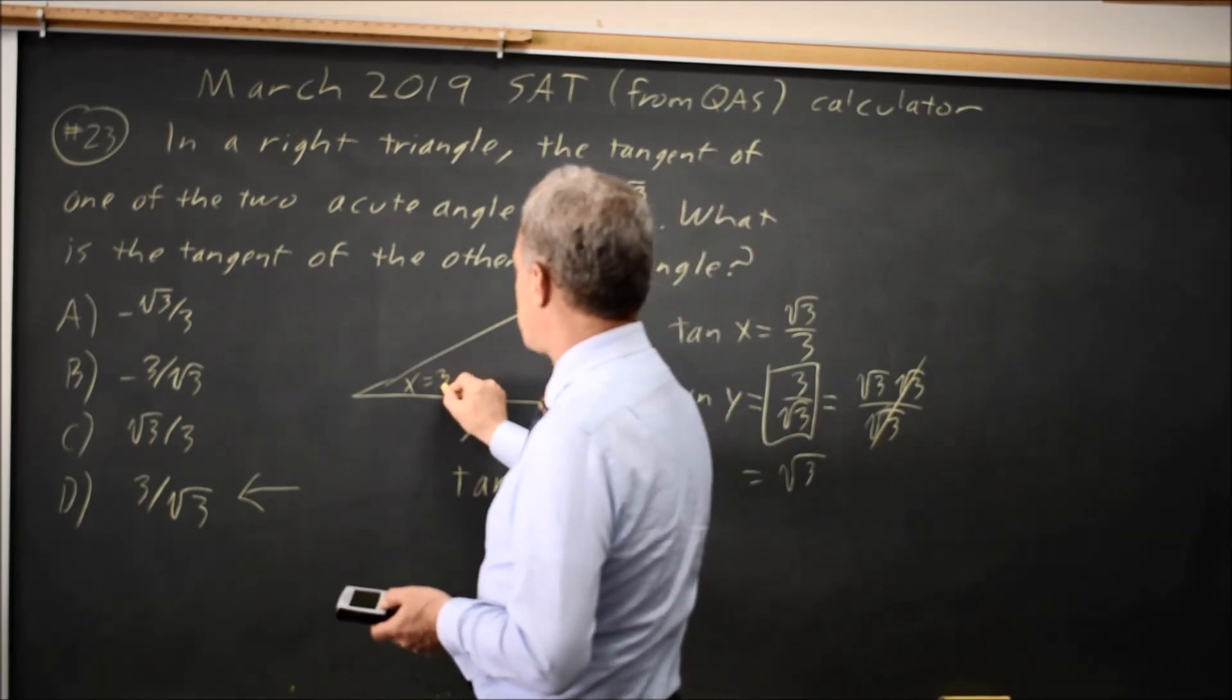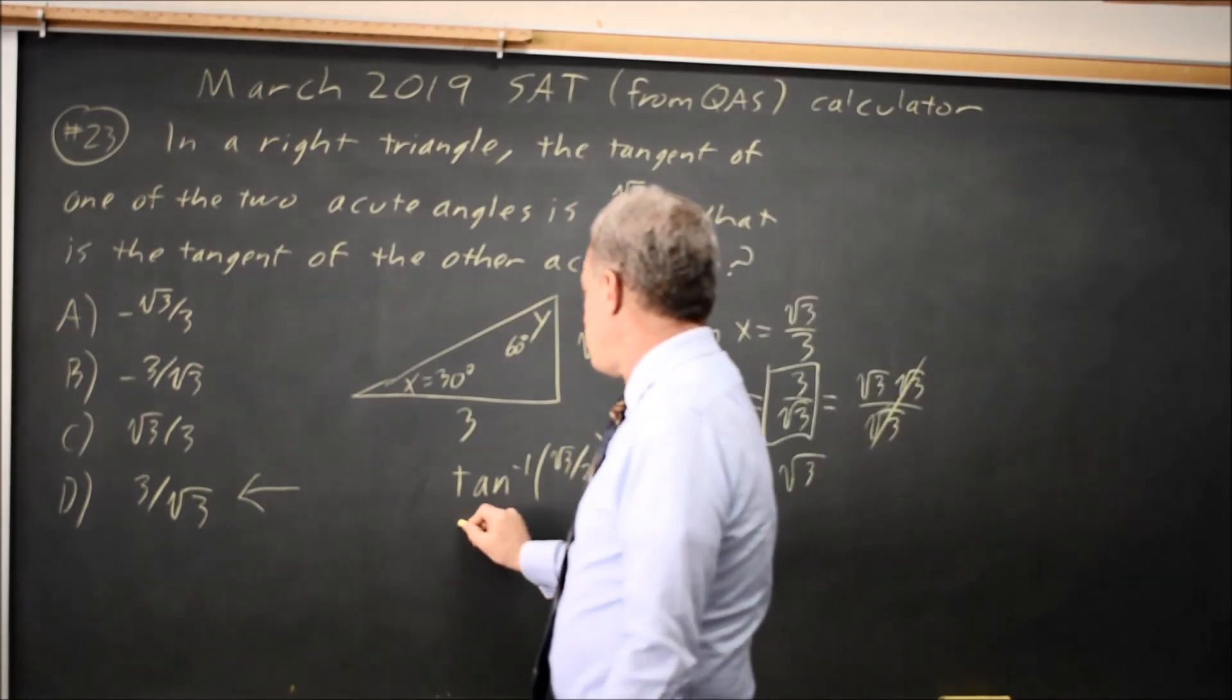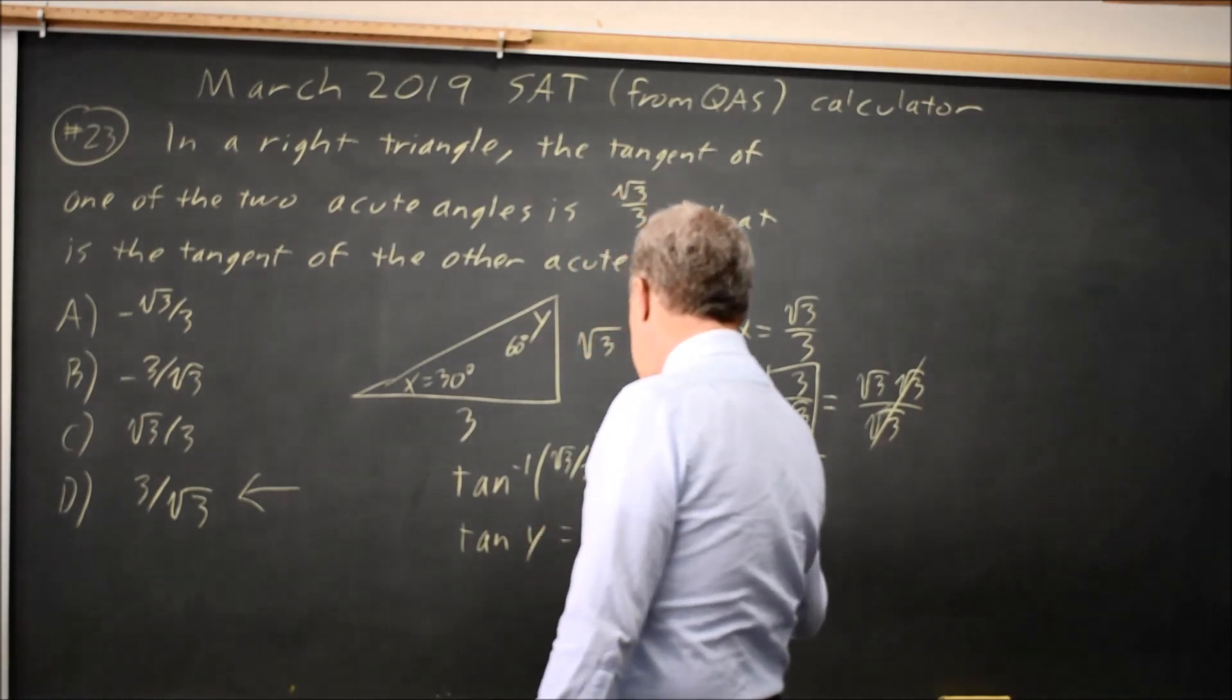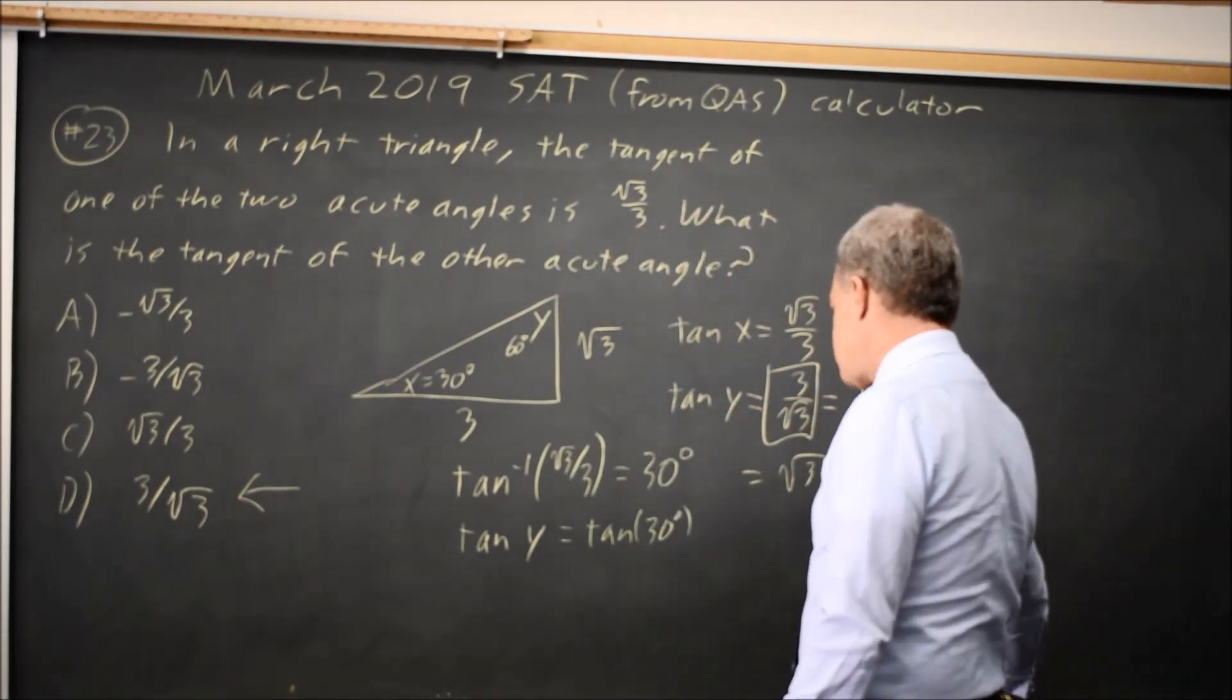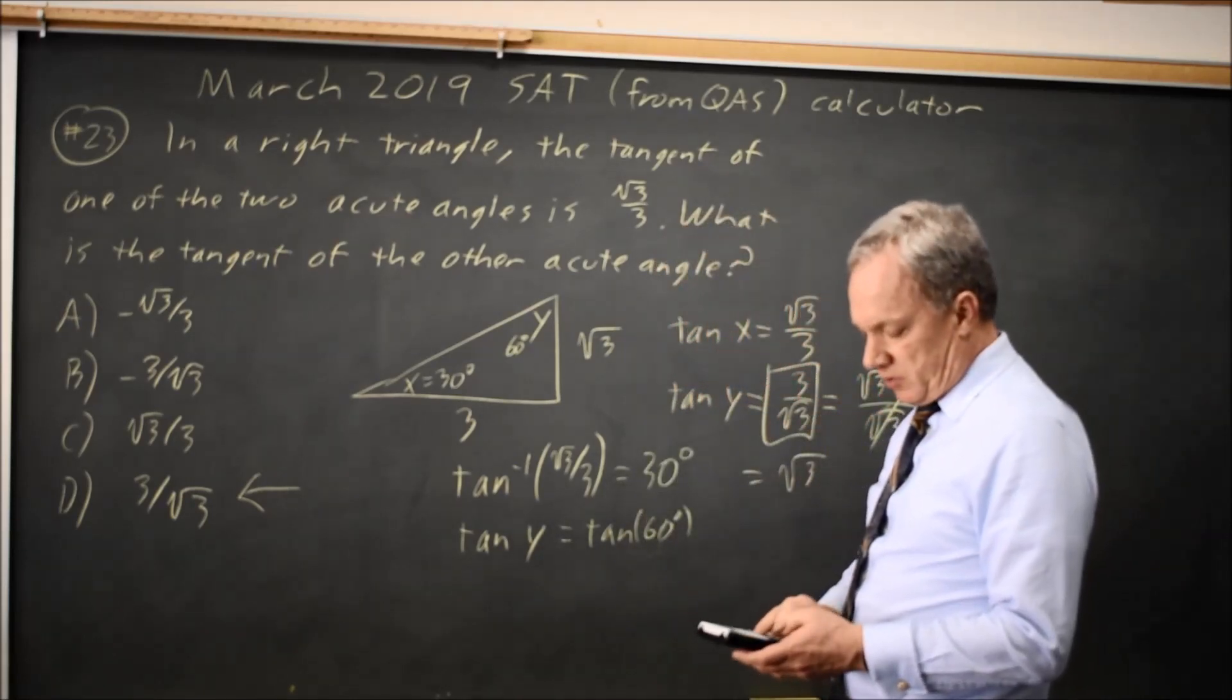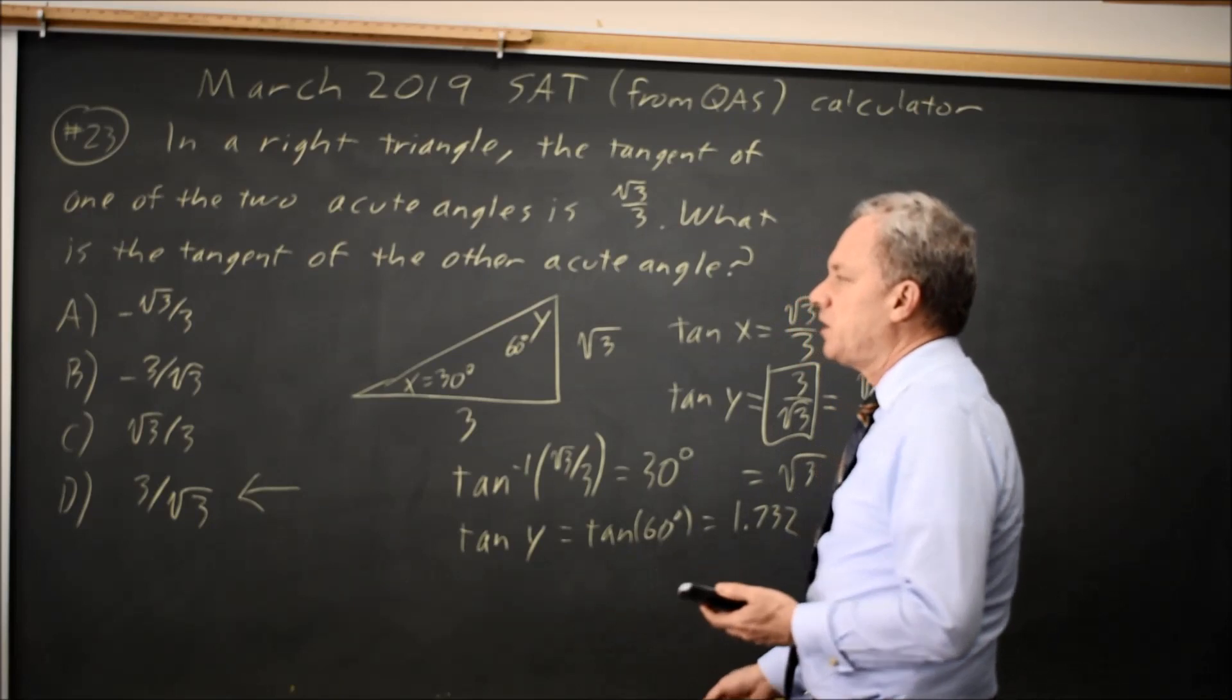So if x equals 30, then y equals 60 degrees. And they're asking what's the tangent of that other acute angle. So that would be tangent of y equals tangent of 30 degrees. And if I find tangent of 30, I'm sorry, y is 60 degrees. Tangent of y equals tangent of 60 degrees. If I find tangent of 60 on my calculator in degree mode, I get positive 1.732-ish.